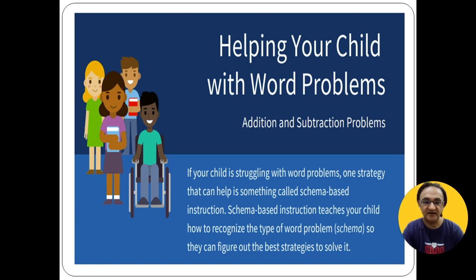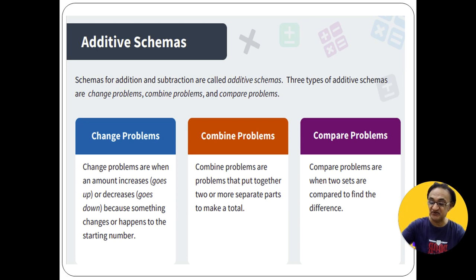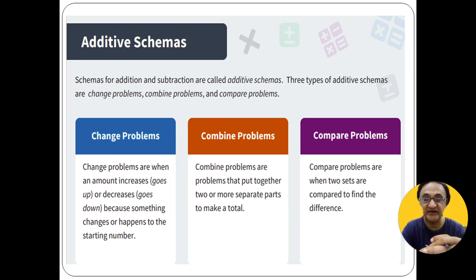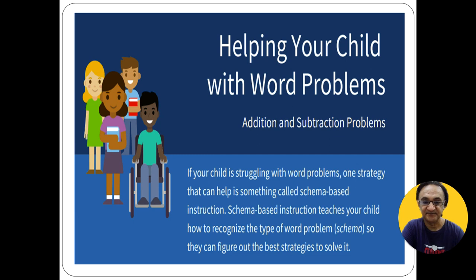These terms — change problems, combine problems, and compare problems — are collectively called the additive scheme. We use the additive scheme to teach word problems. It is a framework used when you are combining values, joining part and part to make a whole or total. This is a schema-based instruction.